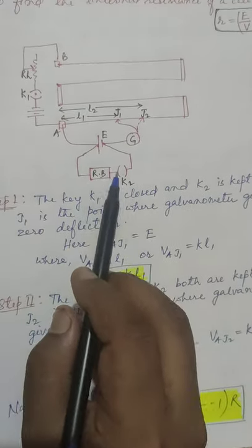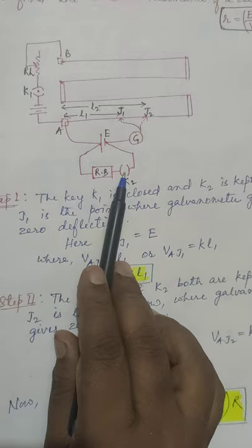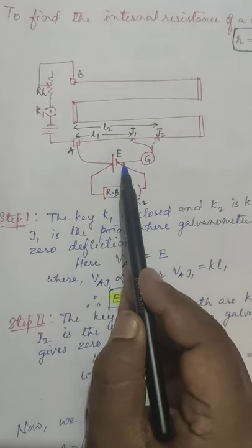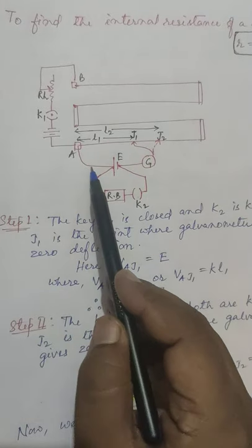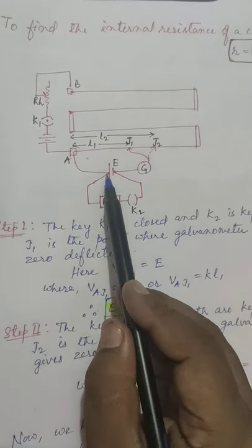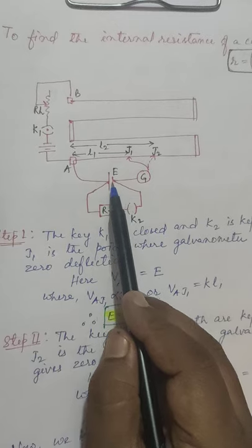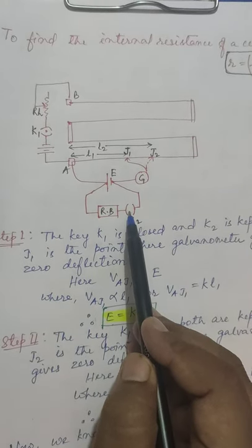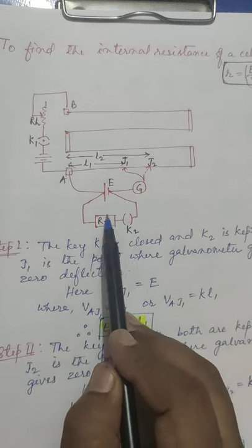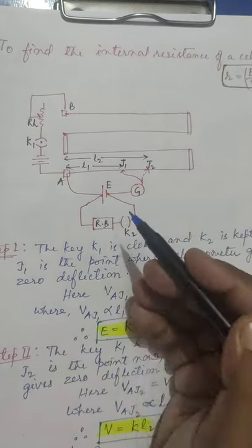In the next step, we close key K2 as well. Now we find a new null point J2 where the galvanometer gives zero deflection. This means no current flows through the galvanometer branch from A to J2 through the cell. However, this time current is drawn from the cell because K2 is closed, and the external resistance R from the resistance box is connected to the cell. So the potential difference now is the terminal potential difference, denoted V.